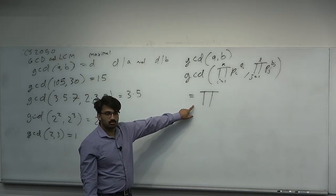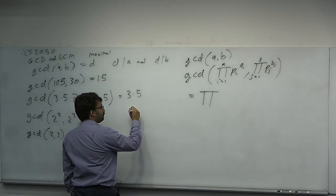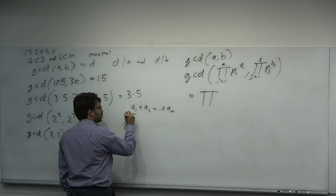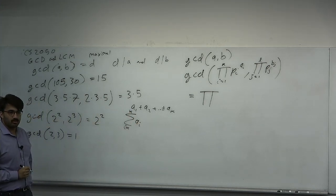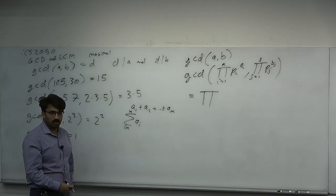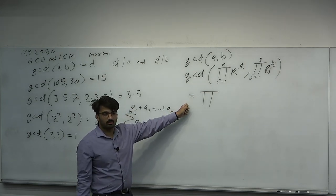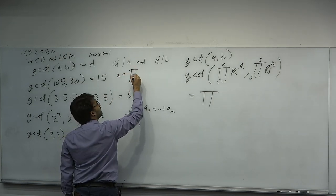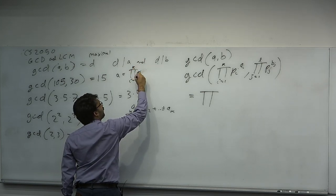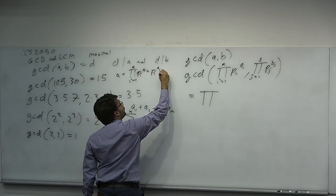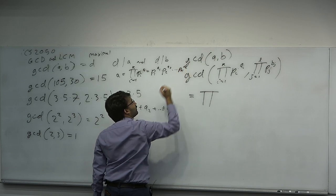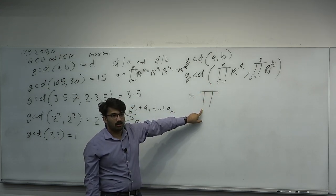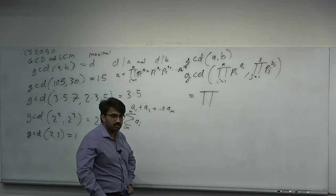Are you familiar with the big Pi notation? When you write a sum A1 plus A2 plus ... plus AK, you can write this as the sum of I equals 1 to K of AI — you may know this from calculus with Riemann sums. Pi is just for product, sigma is for sum. So A equals the product of I equals 1 to K of PI to the AI means P1 to the A1 times P2 to the A2 times ... times PK to the AK.